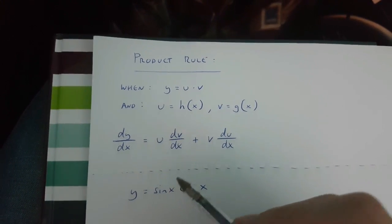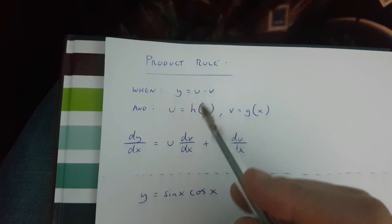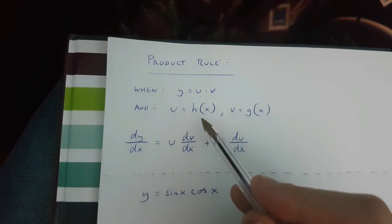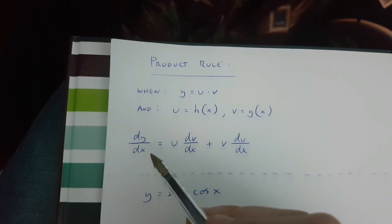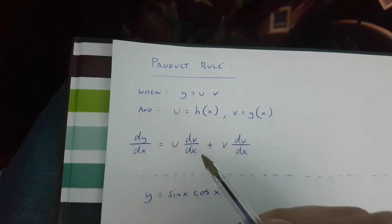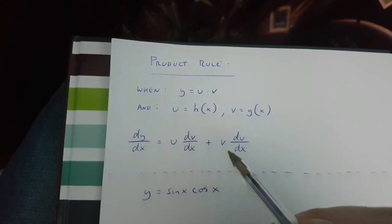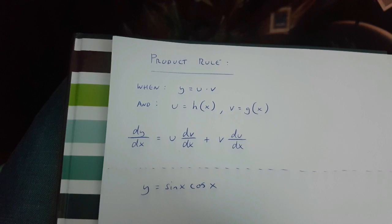Now, the product rule goes like this. When y equals u times v, and u is a function of x, and v is also a function of x, then dy over dx equals u times dv over dx plus v times du over dx.